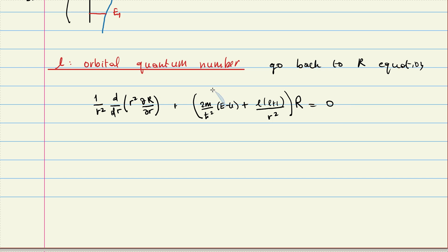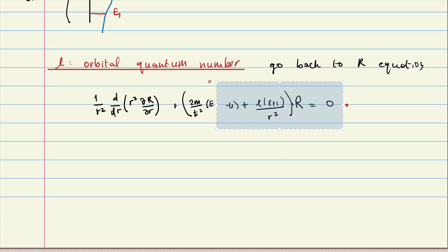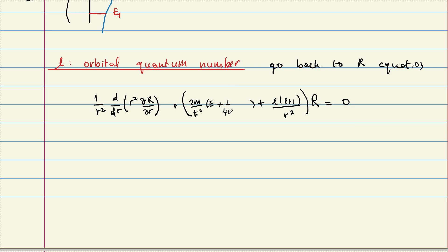Here is my radial equation, and I want to put the Coulomb potential in. So if I insert the Coulomb potential — minus minus is plus — this gives 1 over 4π ε₀ times 1 over r. Now there is a problem: when we did separation of variables, we said each equation should only know about its own variable. The r equation should know about r, the theta equation about theta, and so on.